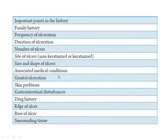Also assess the size and shape of the ulcer, associated medical conditions, genital ulcerations, skin problems, and gastrointestinal disturbances — because many gastrointestinal conditions can manifest as tongue or mucosal lesions. Take drug history, including any NSAIDs or other medications the patient is taking. Also note the age of the ulcer, the base of the ulcer, and surrounding tissues.